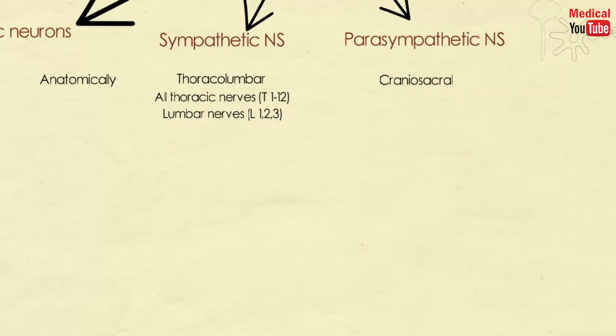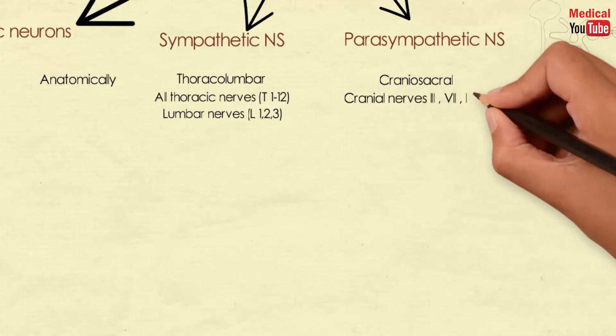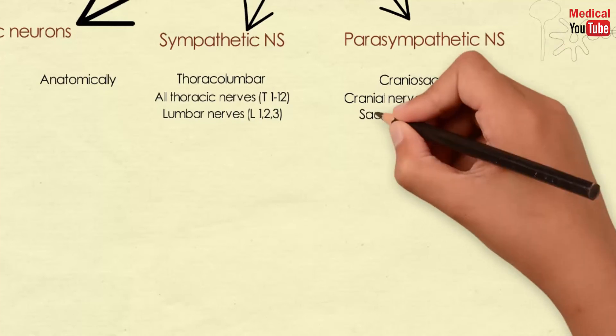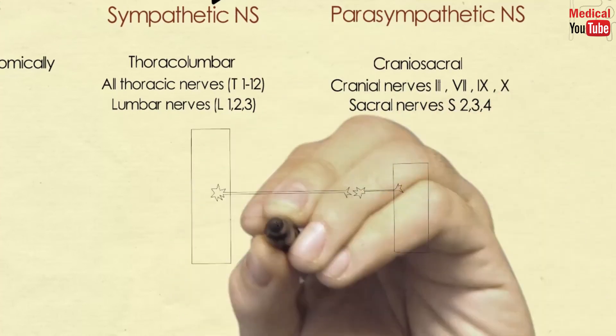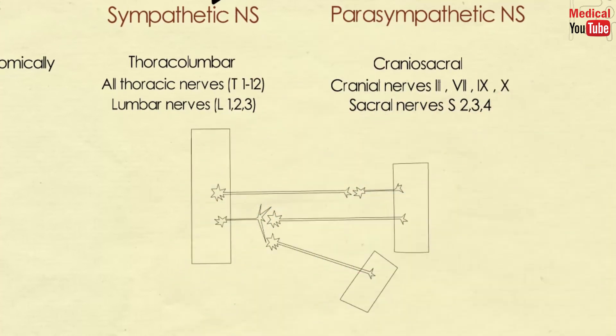And the parasympathetic preganglionic fibers arise from cranial nerves 3, 7, 9, and 10, as well as from the sacral region, S2 to S4, of the spinal cord.